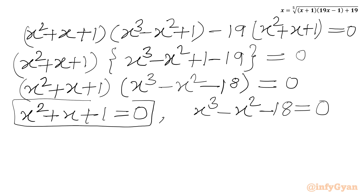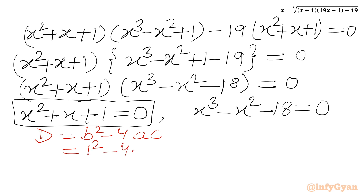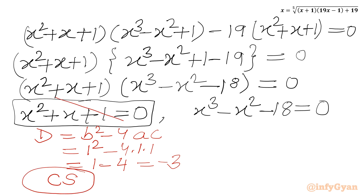We need to solve these two equations. Let's solve the quadratic first — I will check the discriminant. The discriminant equals b² - 4ac, where b is the coefficient of x. So we get 1² - 4(1)(1) = 1 - 4 = -3. The discriminant is negative, so we will get complex solutions. We can reject this quadratic since we are looking for real solutions.